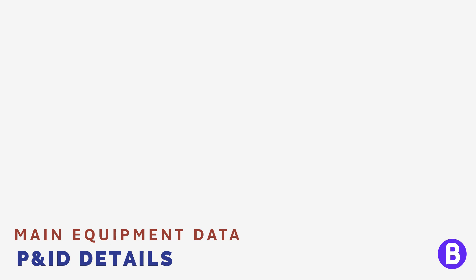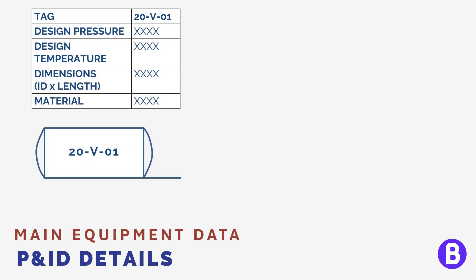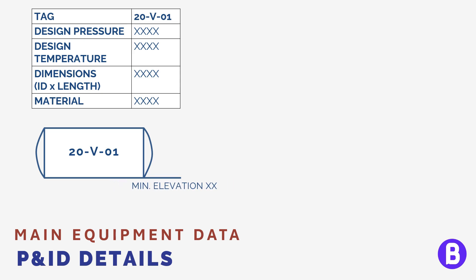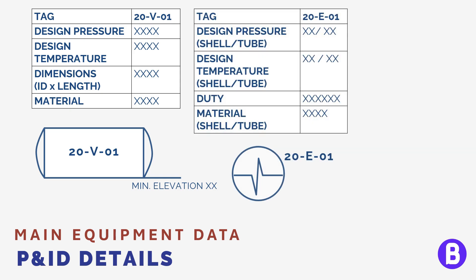We can show some examples of tables for various equipment. For vessels, we can see a table showing the design conditions, main dimensions, and material. The elevation of the vessel can also be shown in the drawing itself, not in the top table. For exchangers, we can also see the design pressure and temperature and the specified material of construction for both the shell side and tube side. The table also includes the exchanger duty as the main design parameter, and some companies may add shell diameter and tube length as well.